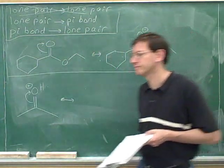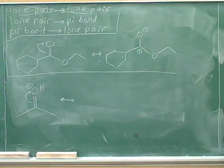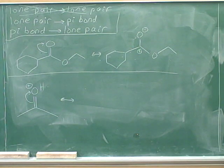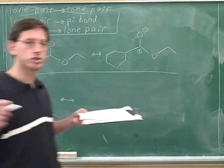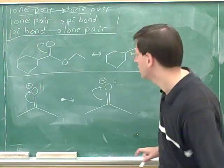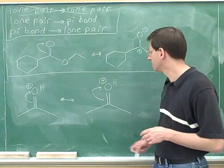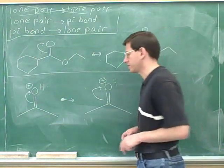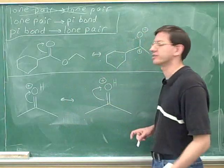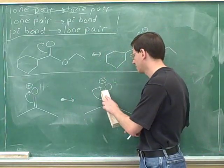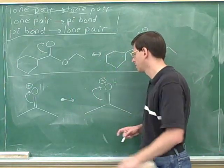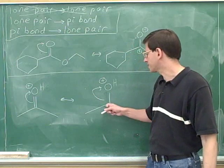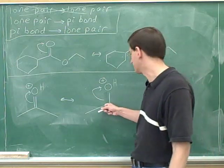Try this example. Start by redrawing the original picture. Where are the electrons coming from? The tail is on the pi bond, so the electrons are coming from the pi bond. We erase the pi bond. This carbon just lost the pi bond, so it becomes more positive.